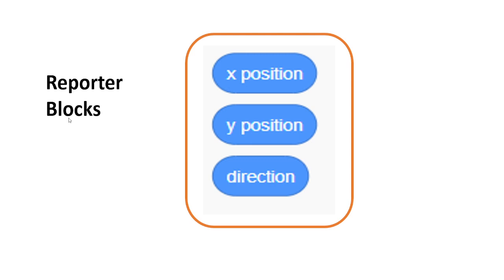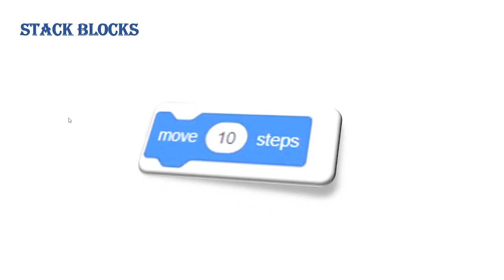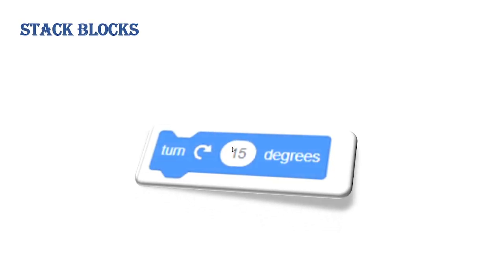Let's see all the code blocks in the motion block one by one. The first one is Move Steps. Move Steps is used to move the sprite by the given number of steps. The default value is 10 steps, and it moves the sprite in the forward direction it is facing. You can change this value as per your requirement.